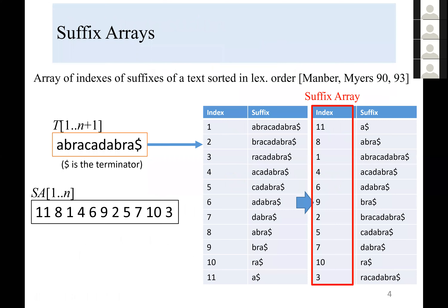This is the first data structure for the problem with linear space and sub-linear query time. I will now explain basic data structures for pattern search. First, I will explain suffix arrays.